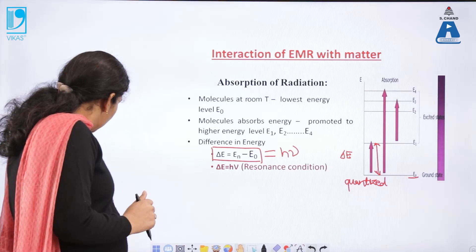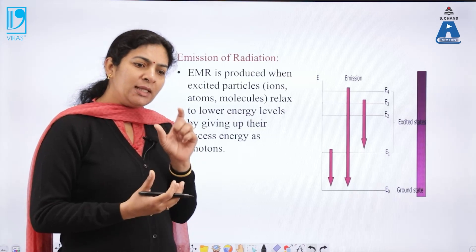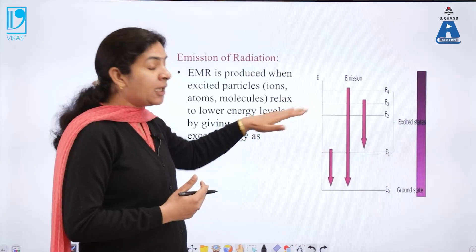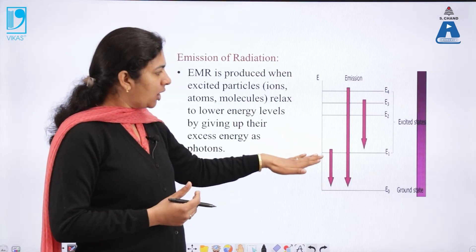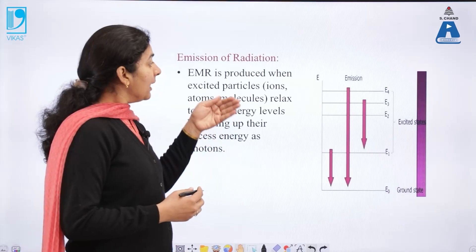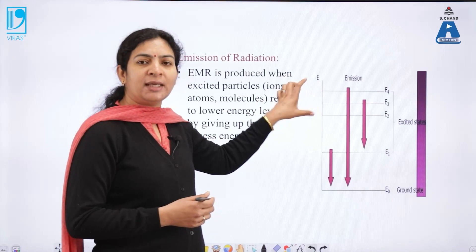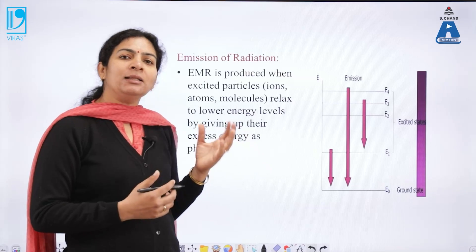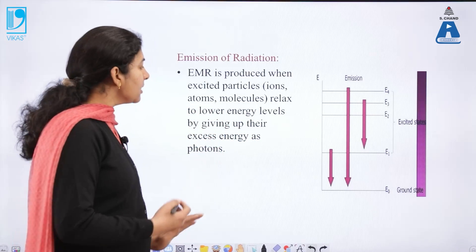We all know that other than the ground state, all excited states are relatively unstable. Only the ground state is the most stable state for any molecule; the higher states are unstable. Therefore, even if a molecule is present in the excited state for some time, it is definitely going to come back to the ground state, emitting its energy in the form of photons. This phenomenon we call emission. So emission takes place when the molecule in the excited state relaxes back to the ground state, and this is again detected as a signal by the spectrophotometer.